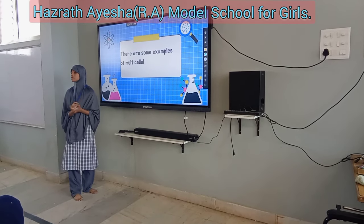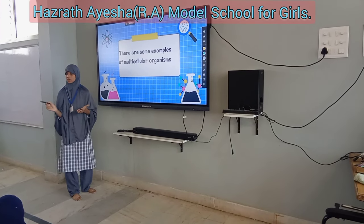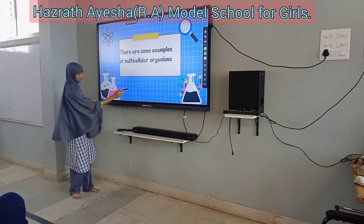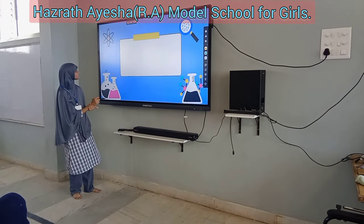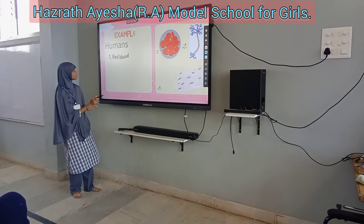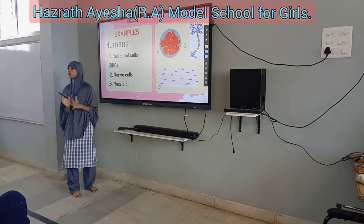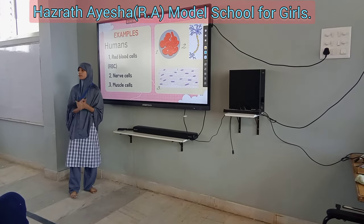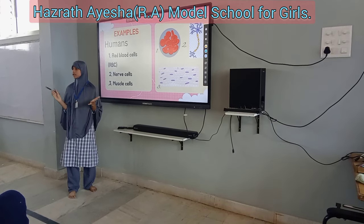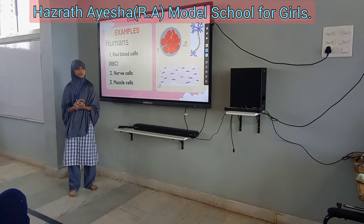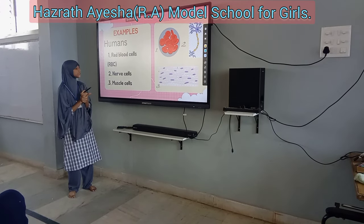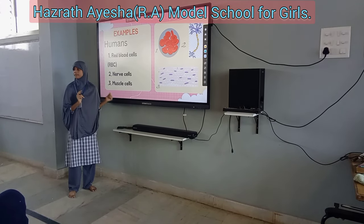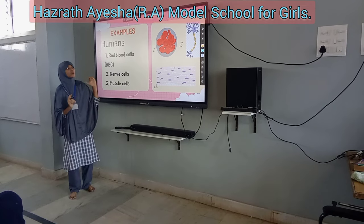There are some examples of multicellular organisms. One example is humans — humans are multicellular organisms. Other examples include red blood cells, nerve cells, and muscle cells.